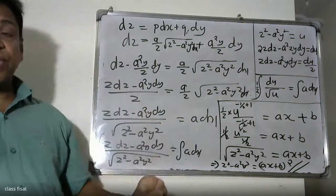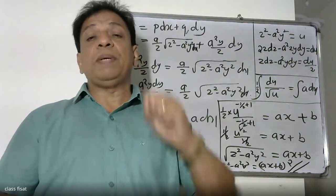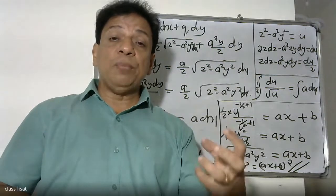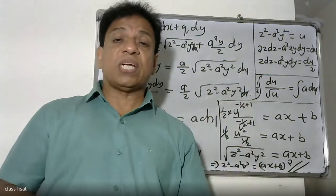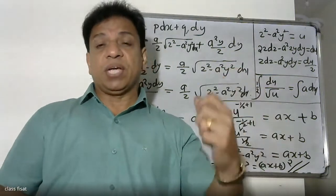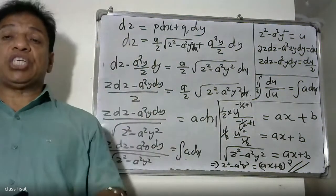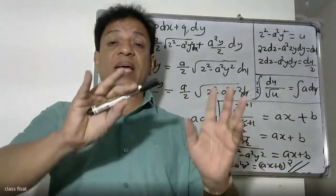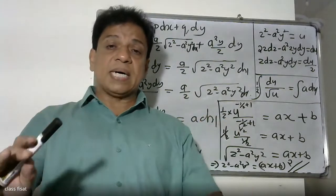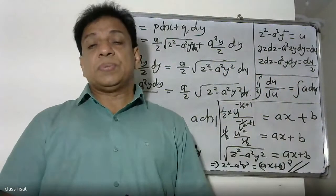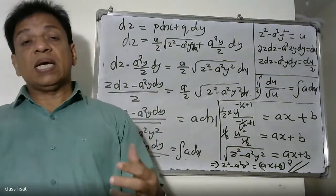We can substitute the partial derivatives and choose values of p and q. Using the total differential, d is equal to p dx plus q dy, substituting the values of p and q. We then integrate to obtain the complete solution. This is the Charpit's method for solving this type of partial differential equation.